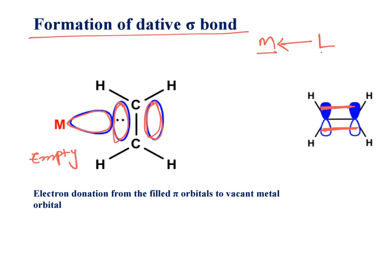The formation of sigma bond is taking place due to overlapping of empty metal orbital with pi orbital of alkene ligand which forms dative sigma bond. The pi electrons shifted to empty metal orbital.